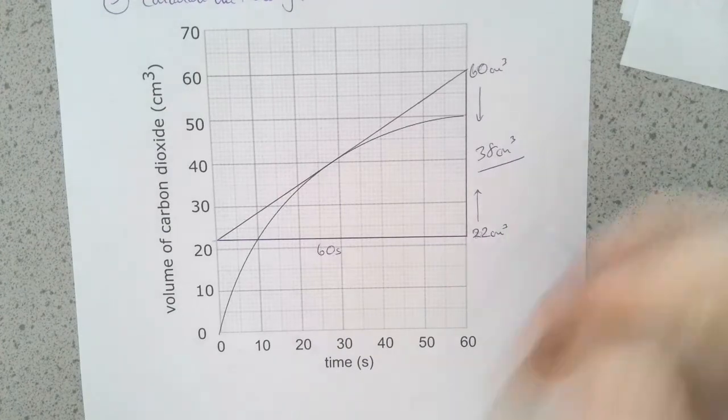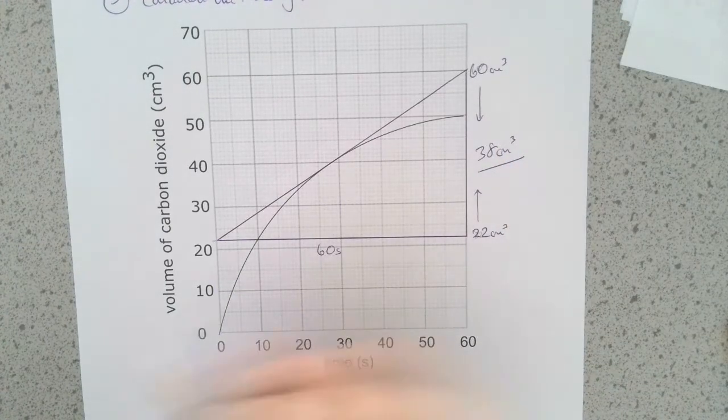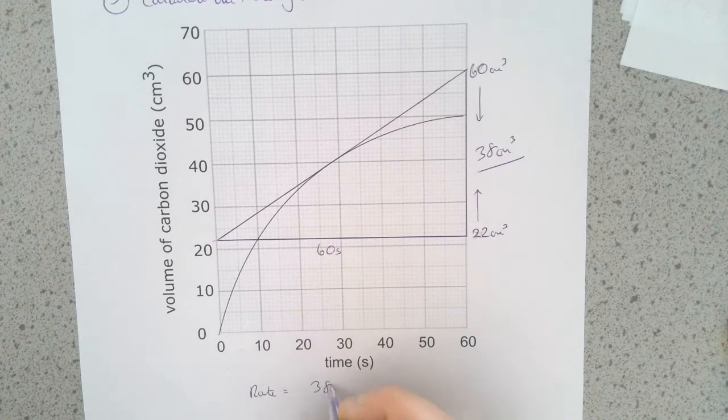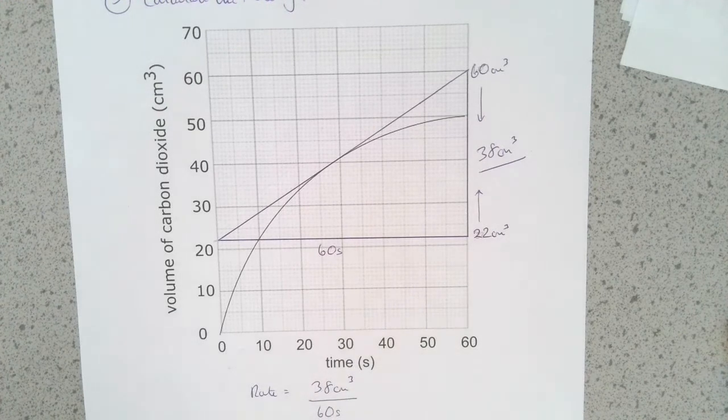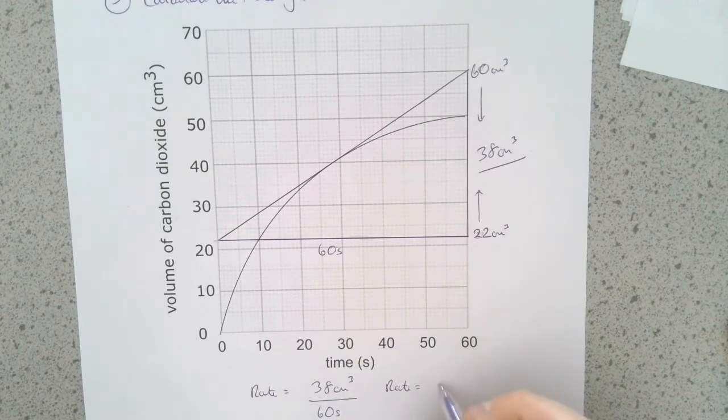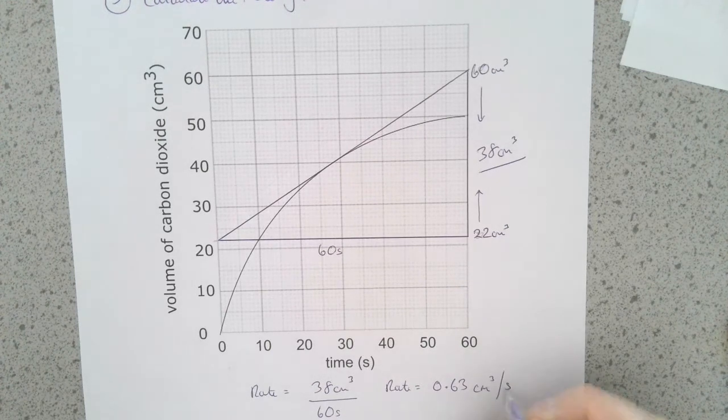So again, what we then do effectively, we're doing the change in y-axis divided by the change in x-axis to find the gradient of the line here. So we're saying that the rate is equal to the change in the y-axis, which is the amount produced, divided by the change in the x-axis, which is the time. So rate equals 38 cubic centimeters over 60, and the rate at 30 seconds is 0.63 centimeters cubed per second.